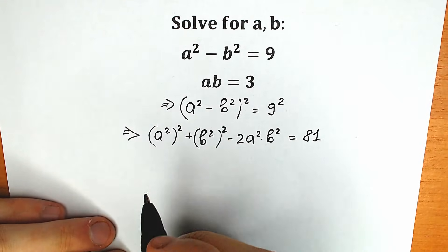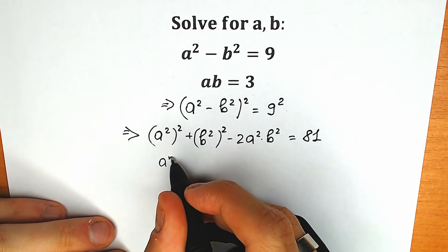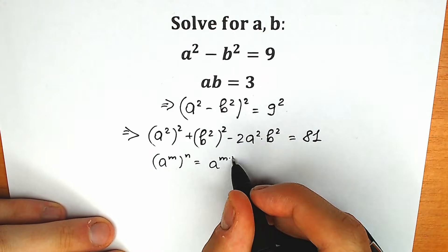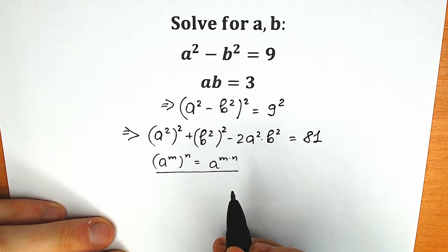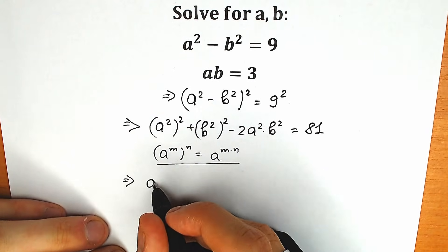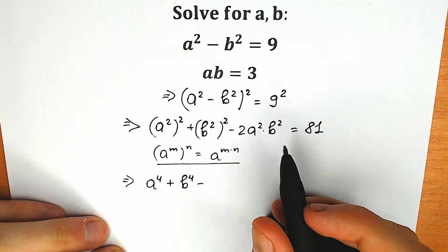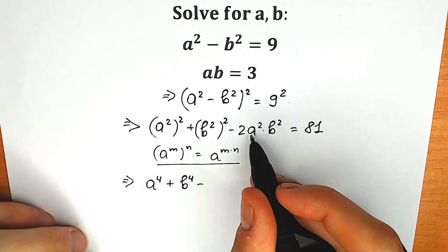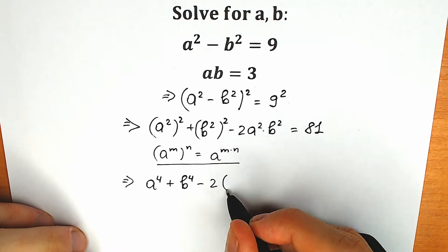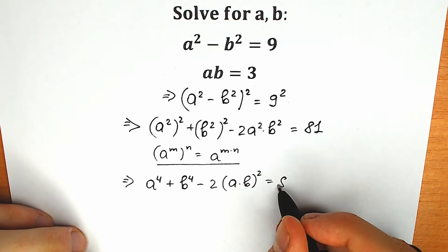Now, a few manipulations. Let's raise a squared to the second power. You need to know a really important formula: when we have a to the power m raised to the power n, we multiply the exponents — a to the power m times n. This is our basic school identity. Applying it, we get a to the fourth plus b to the fourth, and then minus 2 times (a times b) raised to the second power, equal to 81.